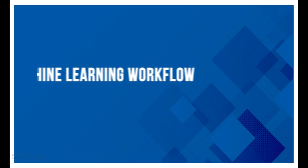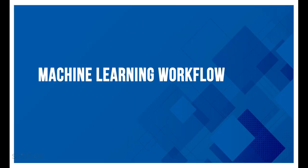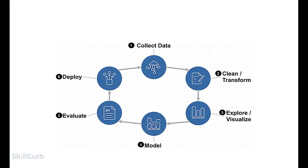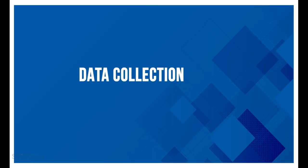Welcome to lecture three of Python machine learning. We've already seen the basic concept and steps involved in machine learning. Now we're going to explore its process flow. There are six main steps involved in machine learning. It is an iterative process. The very first step is data collection.